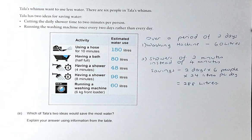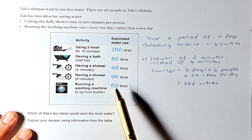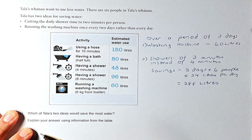Explain your answer using information from the table. We're going to calculate over two days. Over a period of two days, washing machine, if you do one less washing over two days, you are going to save 60 litres.